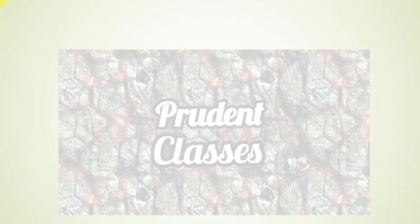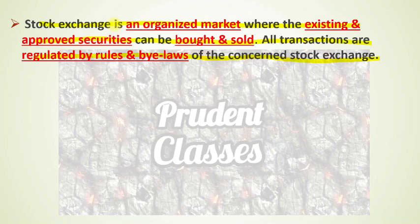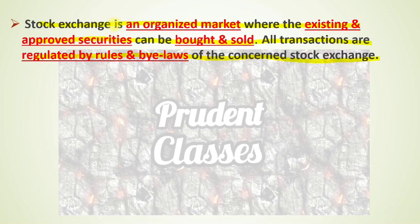Stock exchange is also known as stock market or the secondary market. Stock exchange is an organized market where existing and approved securities can be bought and sold. All transactions are regulated by rules and bylaws of the concerned stock exchange. Securities include shares, debentures, bonds, government securities — anything listed. All transactions in the stock exchange are governed by set rules and procedures that every buyer and seller must follow.